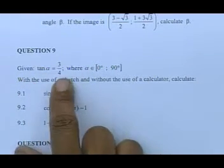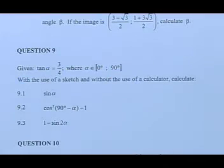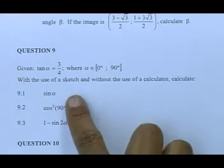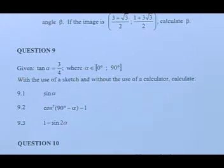Given that tan alpha is three quarters, where alpha is an element of 0 and 90 degrees, they say with the use of a sketch, find sin alpha, find cos squared (90 minus alpha) minus 1, and 1 minus 2 sin alpha.